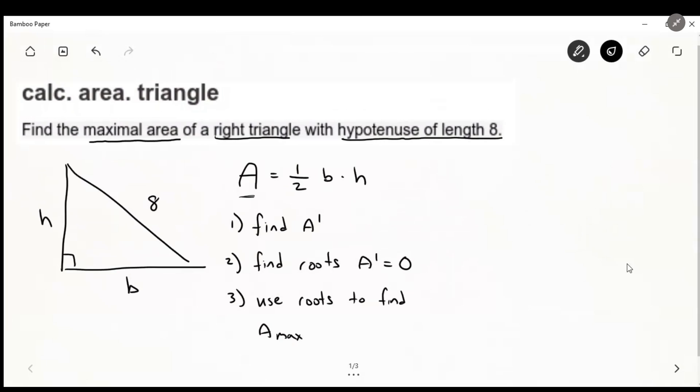And if that doesn't make sense, just leave a comment below and I'll help explain that in a little more detail. Otherwise, let's jump right into it. So we know that this is true about triangles, that the area is one-half base times height. We also know another formula, the Pythagorean theorem. So in this case, we'll stick with our variables, h squared plus b squared is going to equal eight squared, which is 64 here.